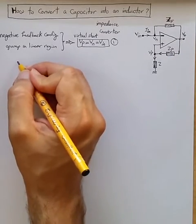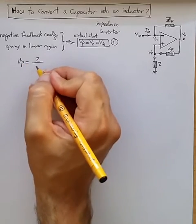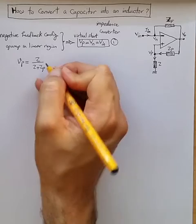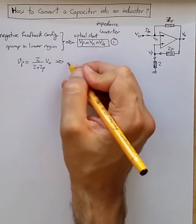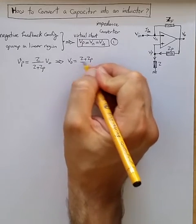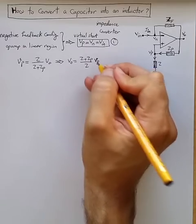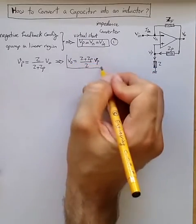So we can just say VP is Z divided by Z plus ZP times Vout, or we can say Vout is one plus ZP divided by Z times VP. That's number two.